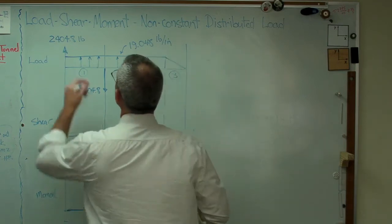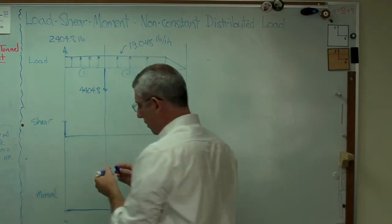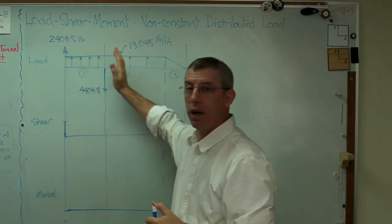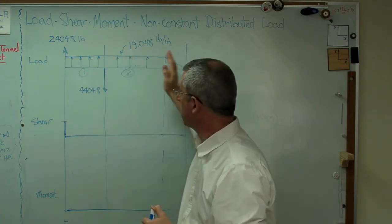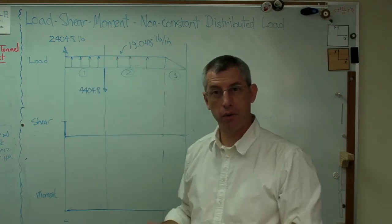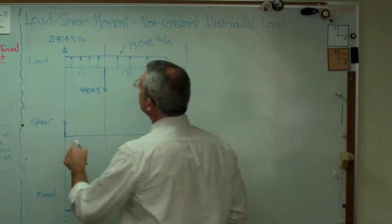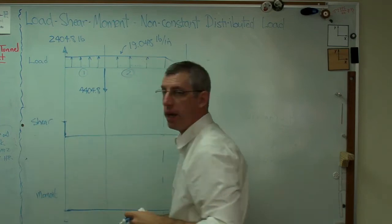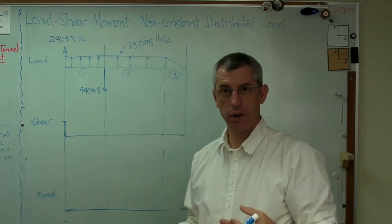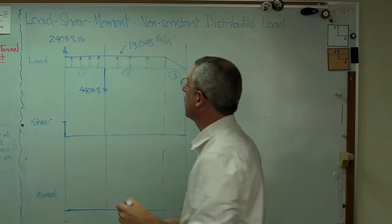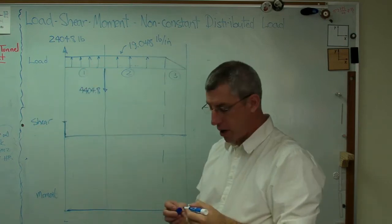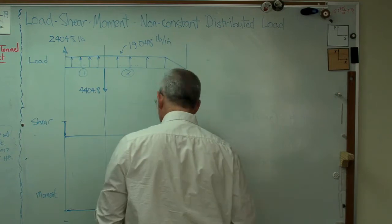Right, in order to do the shear part of the diagram, this is the easy part. All we've got to do is look at how load accumulates, shear force accumulates as you go from the left to the right on the beam. So I'm just going to do what this drawing tells me to do. I'm going to start by going to positive 2,404.8. That's the vertical reaction force at the root. Okay, so I'll start there. Now I'm going to accumulate some load as I go across.